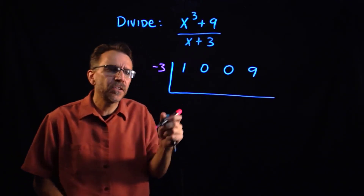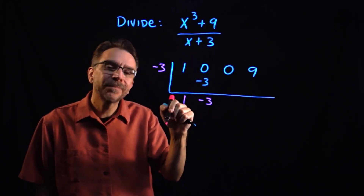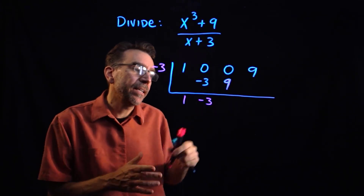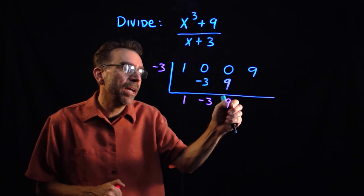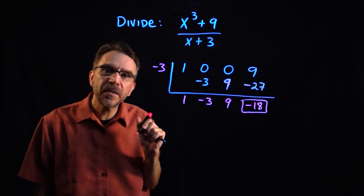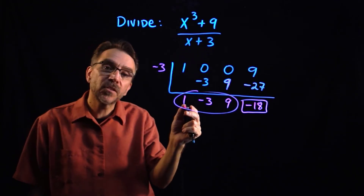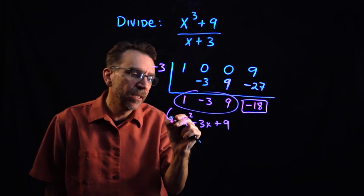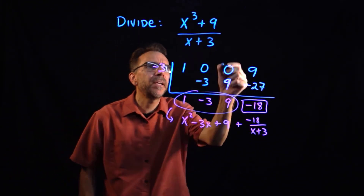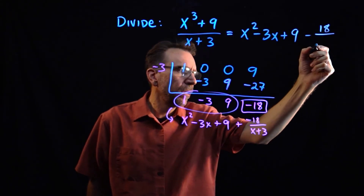We bring down the first term and multiply: negative 3 times 1 is negative 3; adding down, 0 plus negative 3 is negative 3. Then negative 3 times negative 3 is positive 9; adding down, 0 plus 9 is 9. Then negative 3 times 9 gives negative 27, and adding down gives a remainder of negative 18. So the answer is x squared minus 3x plus 9 minus 18 over x plus 3.